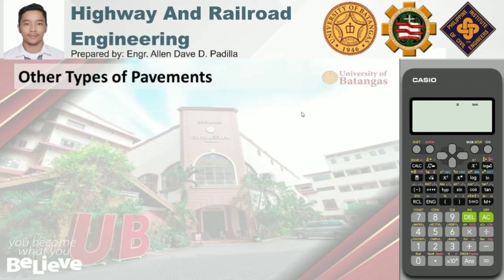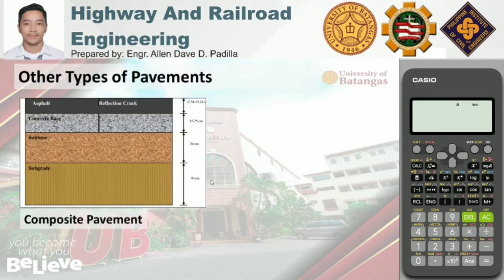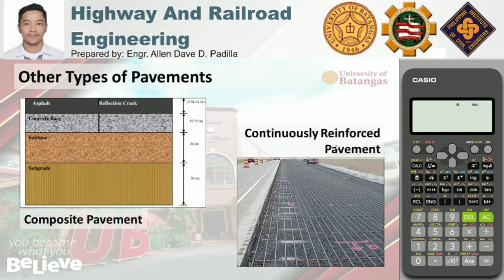For some other types of pavements, we have the composite pavement. Composite pavement is a combination of rigid and flexible pavements. The first three layers from the bottom are the subgrade, subbase, and concrete base — the same layers found in rigid pavement. When that structure is topped with an asphaltic concrete layer, that is called composite pavement.